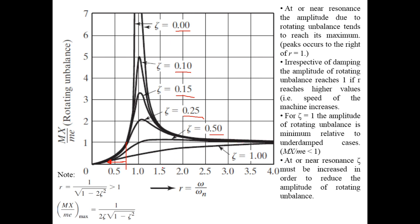Also, irrespective of damping, if you increase the value of r to higher and higher values, all the curves tend to reach the value of one. So the rotating unbalance approaches one either if you have a very high value of r — maybe greater than or equal to three — or if you reduce r to less than or equal to 0.55, you will have a rotating unbalance value of one or less, irrespective of damping.